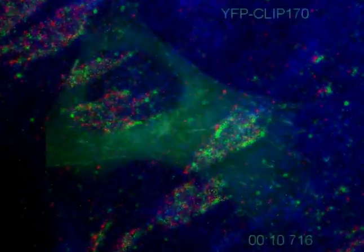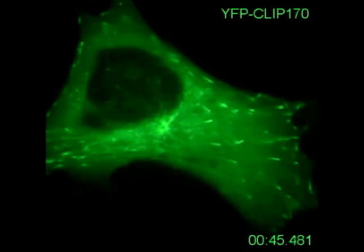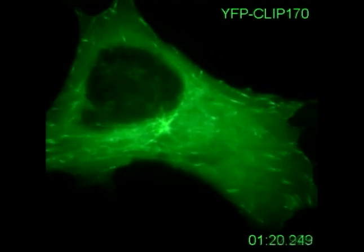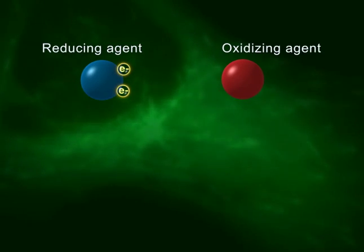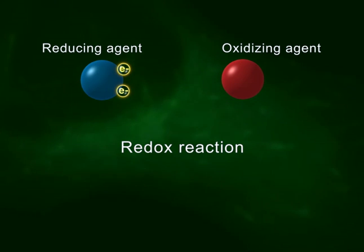Molecules called proteins are constantly catalyzing chemical reactions to move energy and nutrients around and keep the cell alive. One of the most common chemical reactions proteins use is known as an oxidation reduction, or redox reaction.